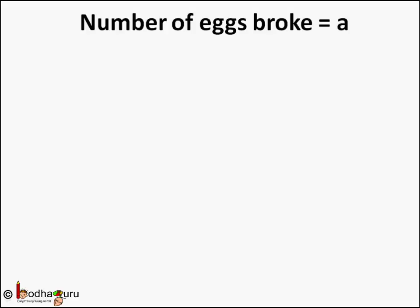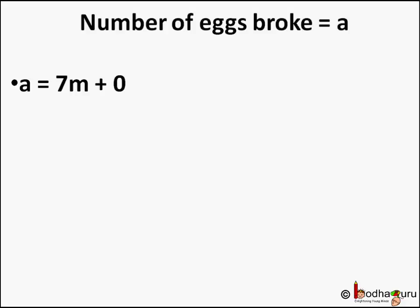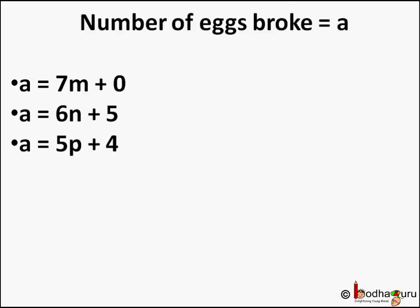So let us understand what the trader said. Say the number of eggs broken is equal to a. So a is equal to 7m plus 0, where m is the quotient if we divide a by seven and the remainder is zero. Similarly, a is equal to 6n plus 5, where n is the quotient if we divide a by six and the remainder is five. And so on.